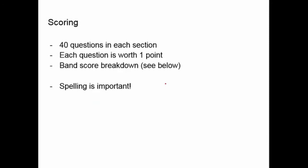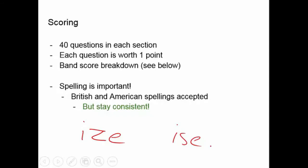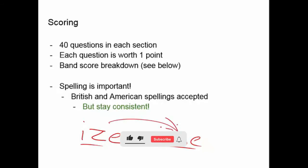On the listening section, spelling is important — and that's tough because you're hearing words, not reading them, so you need to spell them correctly especially on short answer questions. You can use British or American spellings, but you're supposed to stay consistent. For example, many American spellings end in I-Z-E while British spellings might end in I-S-E — either would be correct, but the IELTS wants to see that you're using one system consistently.